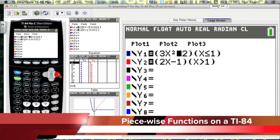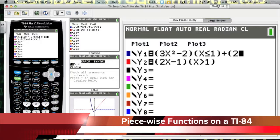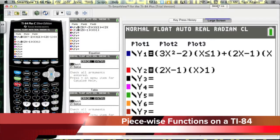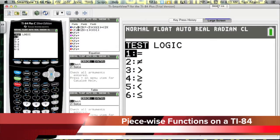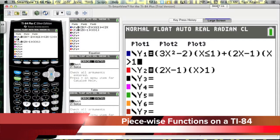So one way I could fix that and make it one smooth graph - we don't want that, by the way - one smooth graph would be to put the plus sign here and then put 2X minus 1 in open parentheses, and then put X is greater than 1.